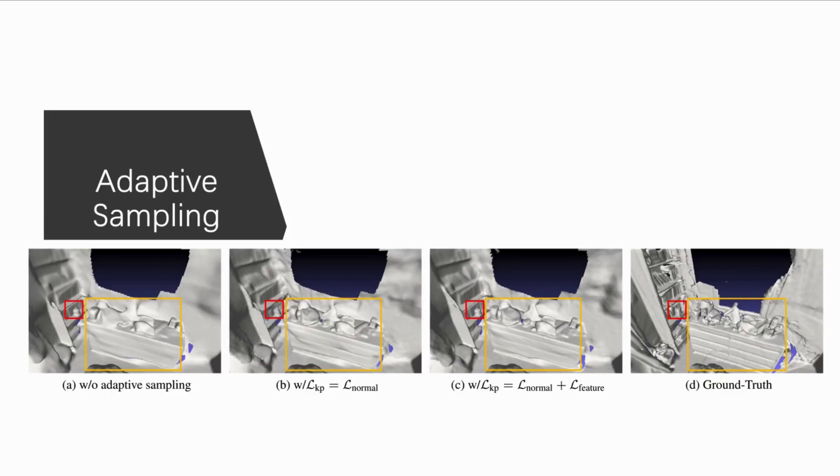Moreover, we implement adaptive sampling during the training phase, because key points like SIFT points or others typically identify more meaningful regions, such as edges. As you can see in the lower images A and B, our method reconstructs the shape of objects with greater accuracy. However, it also introduces more artifacts, noticeable within the red bounding box. We've found that applying feature loss can mitigate this issue, as demonstrated in image C.